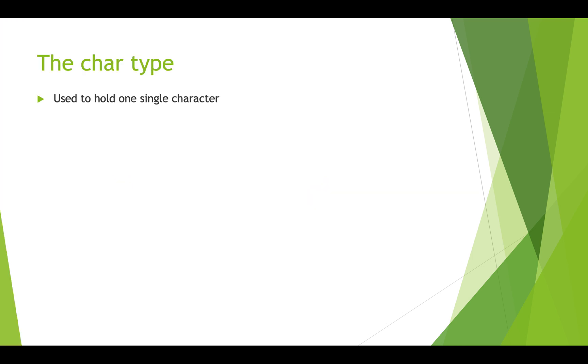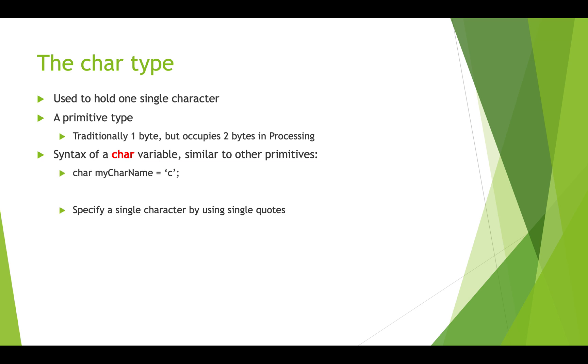The char type is used to hold a single character as opposed to strings which hold a collection of characters. It's usually one byte in older programming languages but in processing it occupies two bytes. The syntax of a char variable is very similar to other primitive data types that you've seen.